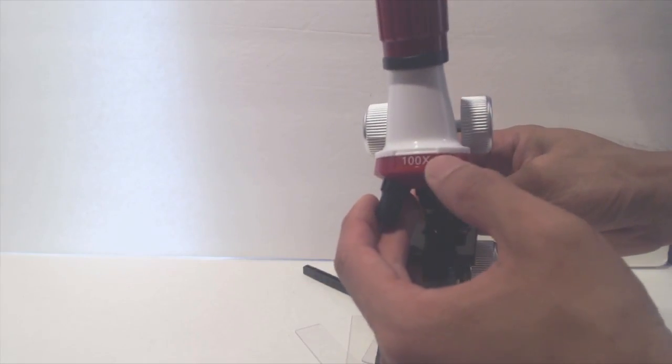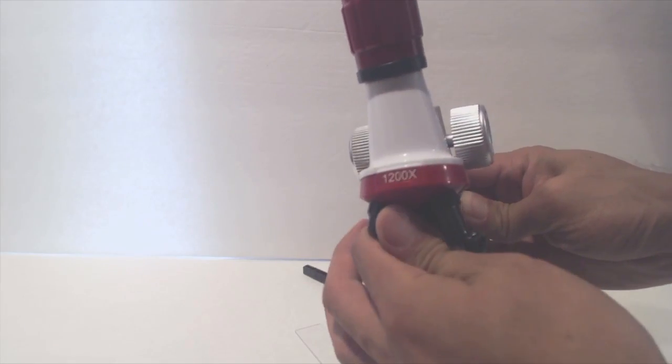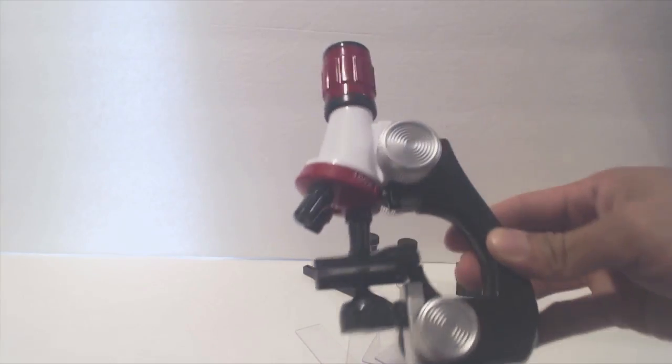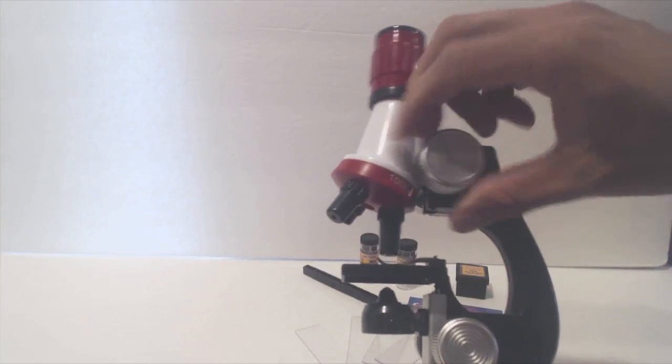The magnification levels are 100x, 400x, and 1200x. To adjust the height and focus of the lens, you'll have to scroll the wheel in the middle.